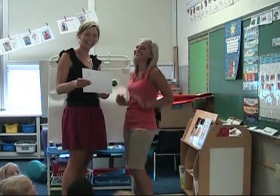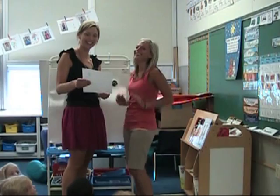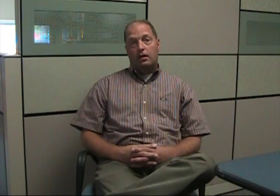My friend Ava here is going to demonstrate how the interrupt rule works. Here we have two adults talking. Ava is going to come up with something that she would like to talk to them about. She puts a quiet hand on the arm and waits for them to recognize her, and that's how the interrupt rule works here at Greenwood.